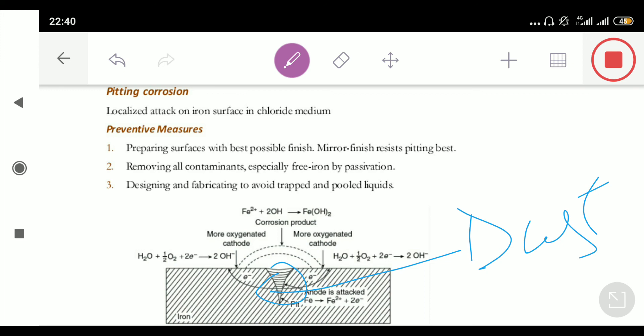So, these are some of the methods by which we can prevent this corrosion. See, the problem is there is a pit and that pit is the responsible for this corrosion. So, in any case, we have to avoid the pits. And that is only possible by, you know, preparing surface with best possible finish so that there is no pit on it.